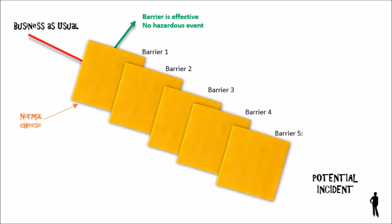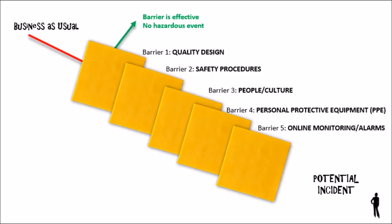So the Swiss cheese model is a way that engineers use to describe the different contributing factors to an accident happening. The idea is that between you and a negative effect happening, you have a variety of barriers in place — a variety of things that prevent the bad thing from happening. You might have the design and the quality of the design,